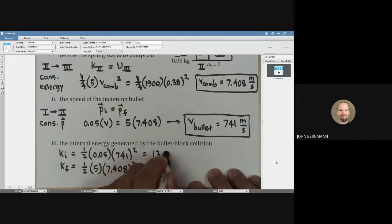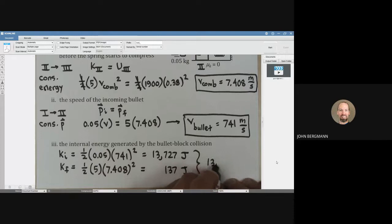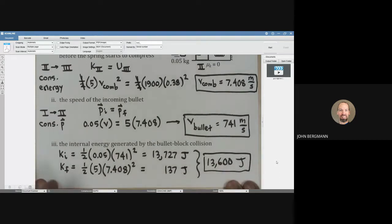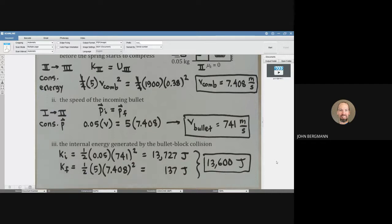This comes out to be almost 14,000 joules, and this one comes out to be a paltry 137 joules. The difference between those is on the order of 13,600 joules. You can see a huge fraction of the initial kinetic energy has been converted into thermal energy.